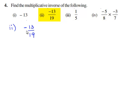We need to find the multiplicative inverse of minus 13 by 19. For every non-zero rational number a by b, there exists another non-zero rational number c by d such that a by b times c by d equals 1, which is equal to c by d times a by b.